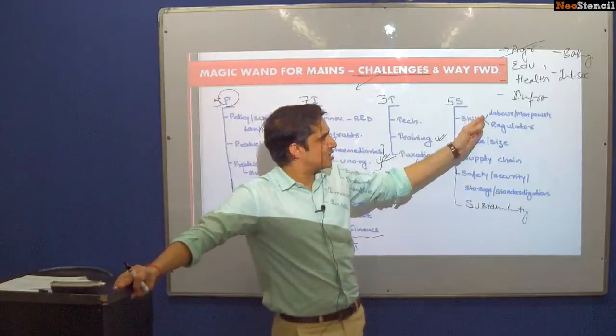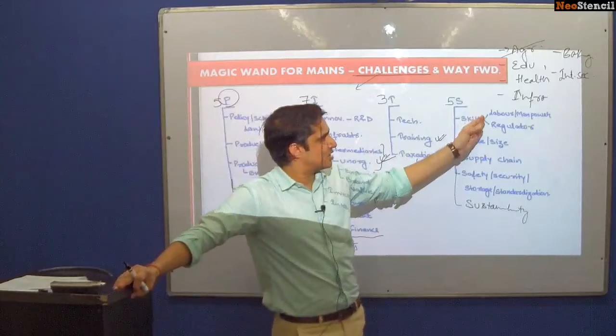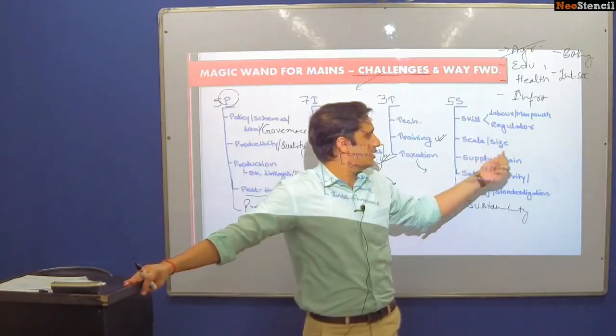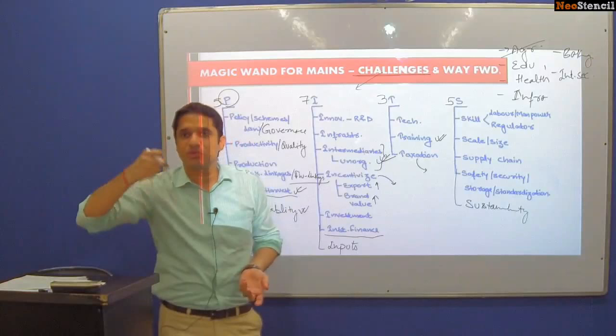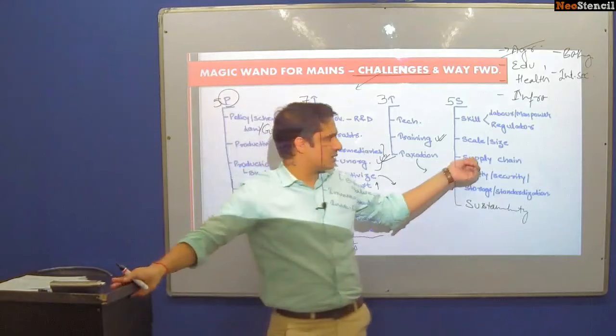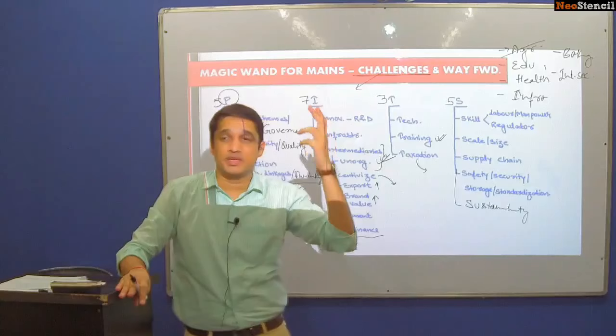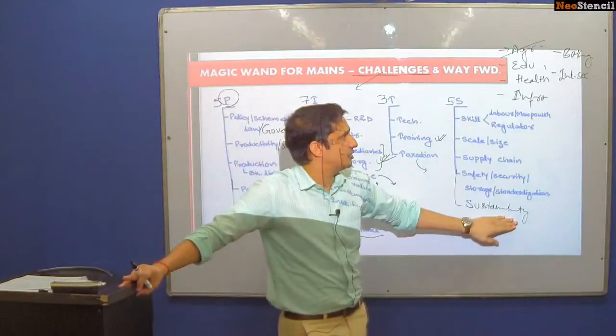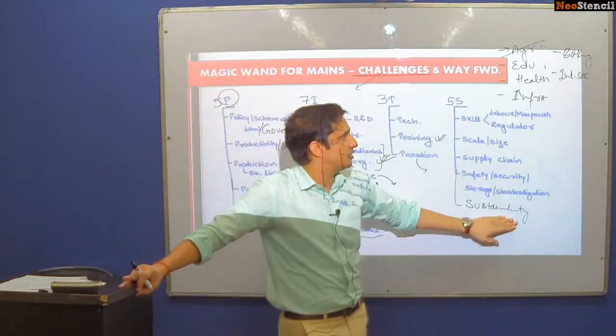Under the 5 S's in education: skill of teachers and manpower is a problem, and regulator skill — UGC, Medical Council of India — all have training problems. Scale and size is a major problem. Supply chain from pre-nursery to primary to secondary and higher secondary is a major problem. Safety, security, and sanitation are major problems. Standardization is a problem because different schools follow different boards, which is why the National Testing Agency was introduced though it is still opposed by some states. Sustainability of education is also a concern — this covers at least 15-20 dimensions in the education sector.